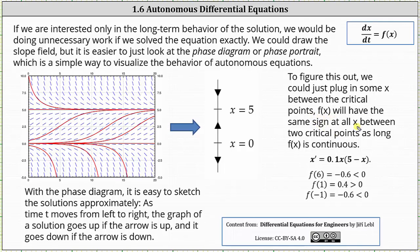f of x will have the same sign at all x between two critical points as long as f of x is continuous. We could select x equals 6, 1, and negative 1, and then determine f of 6, f of 1, and f of negative 1 by substituting into the right side of the differential equation. f of 6 equals negative 0.6, which is less than 0, indicating x of t is decreasing when x is greater than 5, so we have a downward arrow. f of 1 is positive, meaning x of t is increasing when x is between 0 and 5, giving an upward arrow. f of negative 1 is negative, indicating x of t is decreasing when x is less than 0.